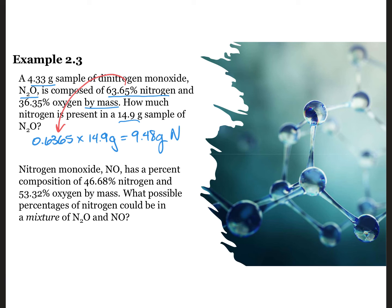All pure samples of N2O have the same percent composition, 63.65% nitrogen and 36.35% oxygen by mass. All pure samples of NO have the same percent composition, 46.68% nitrogen and 53.32% oxygen. A mixture of dinitrogen monoxide and nitrogen monoxide must have a percentage by mass of nitrogen between 46.68% and 63.65%.